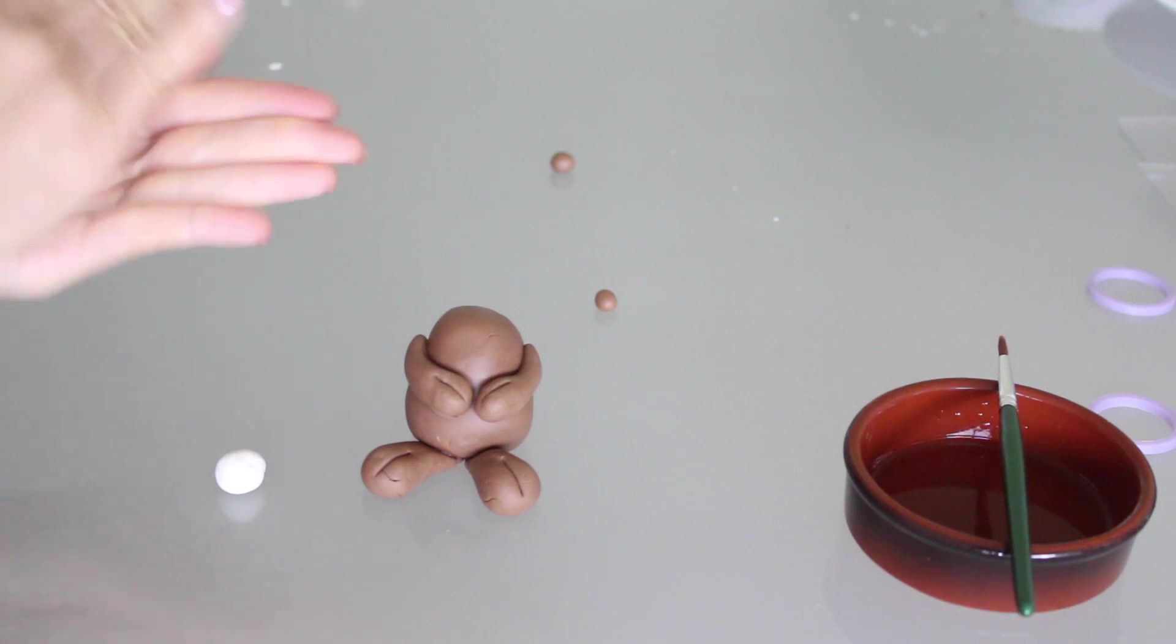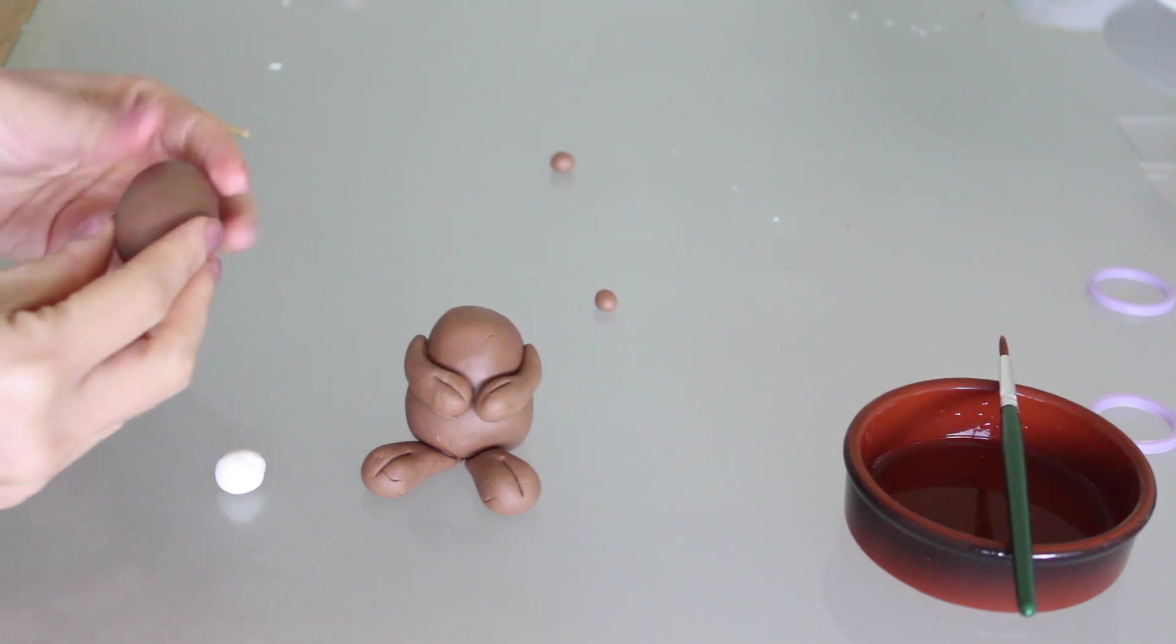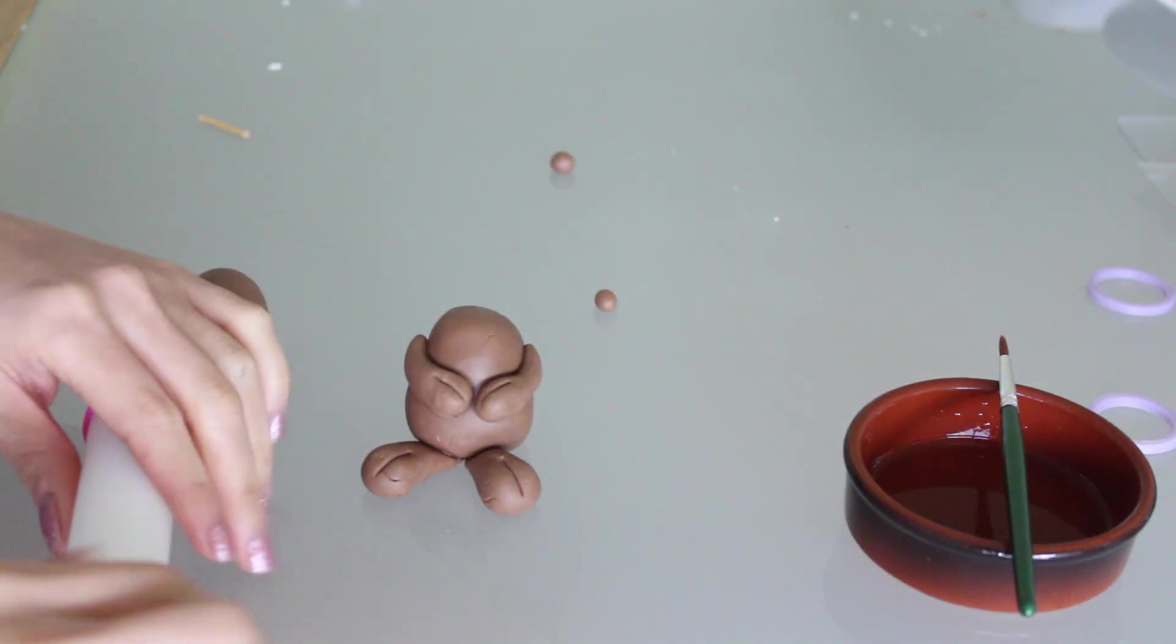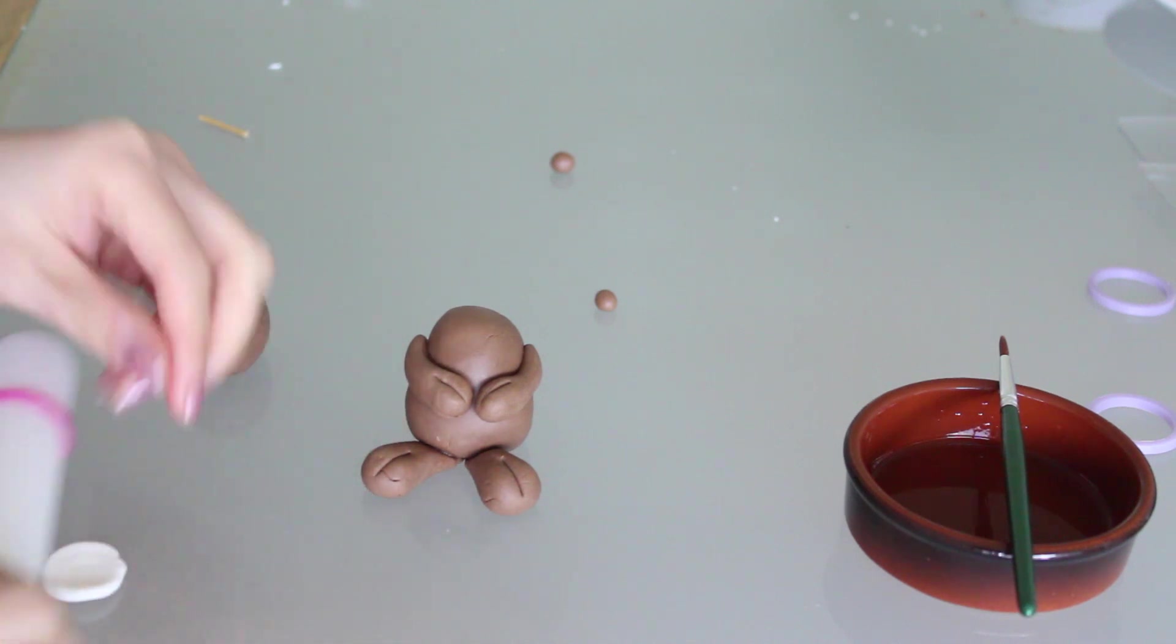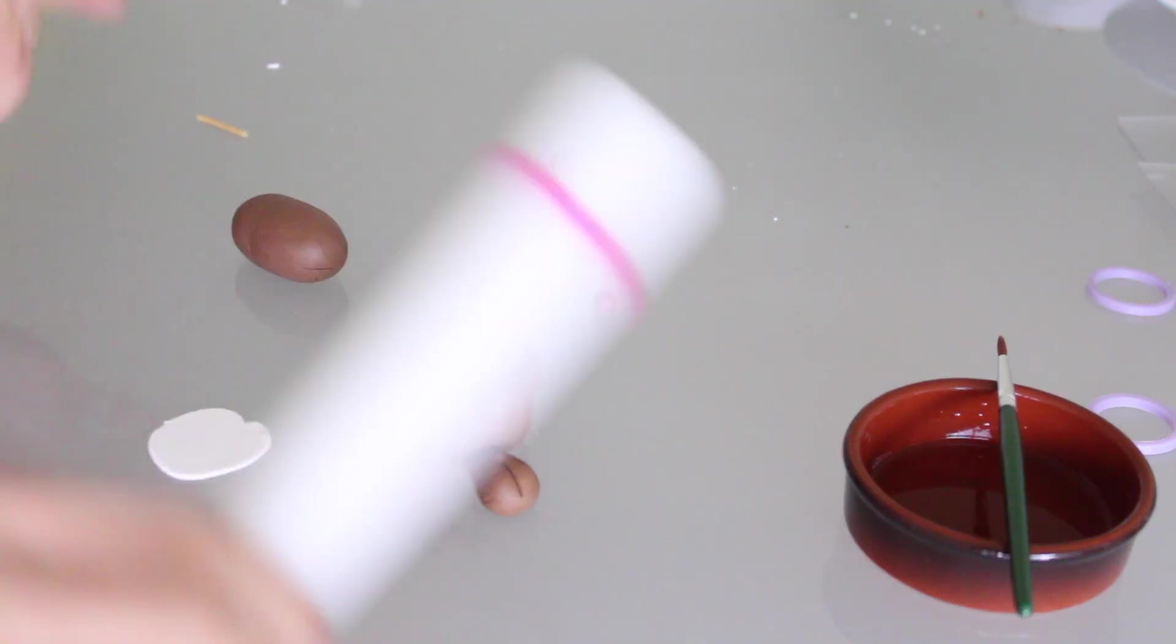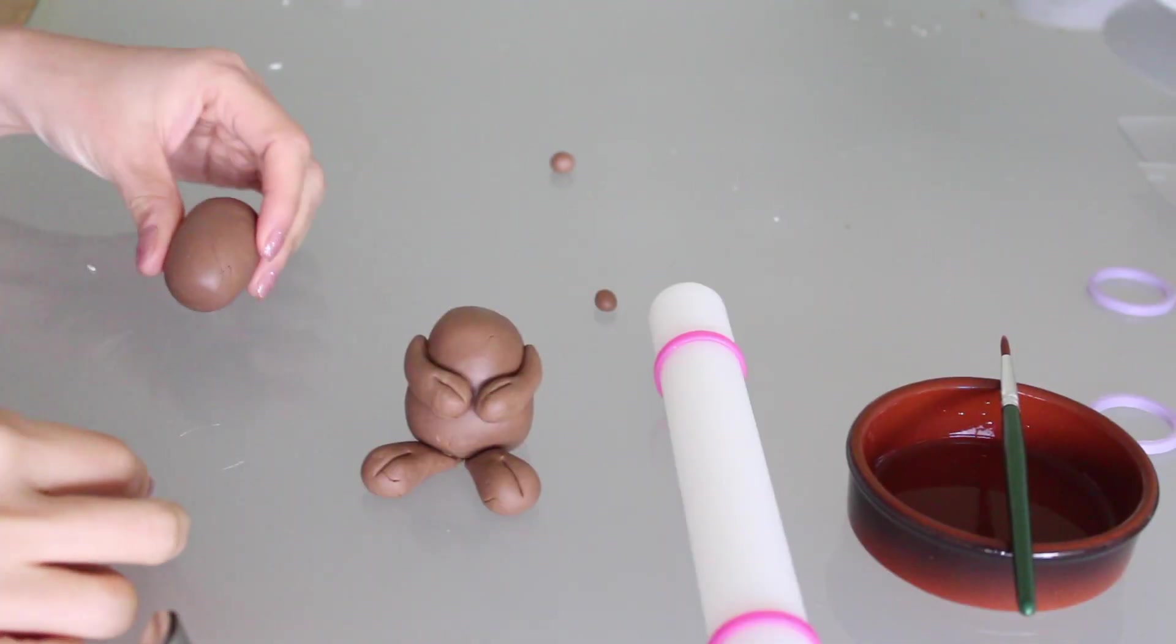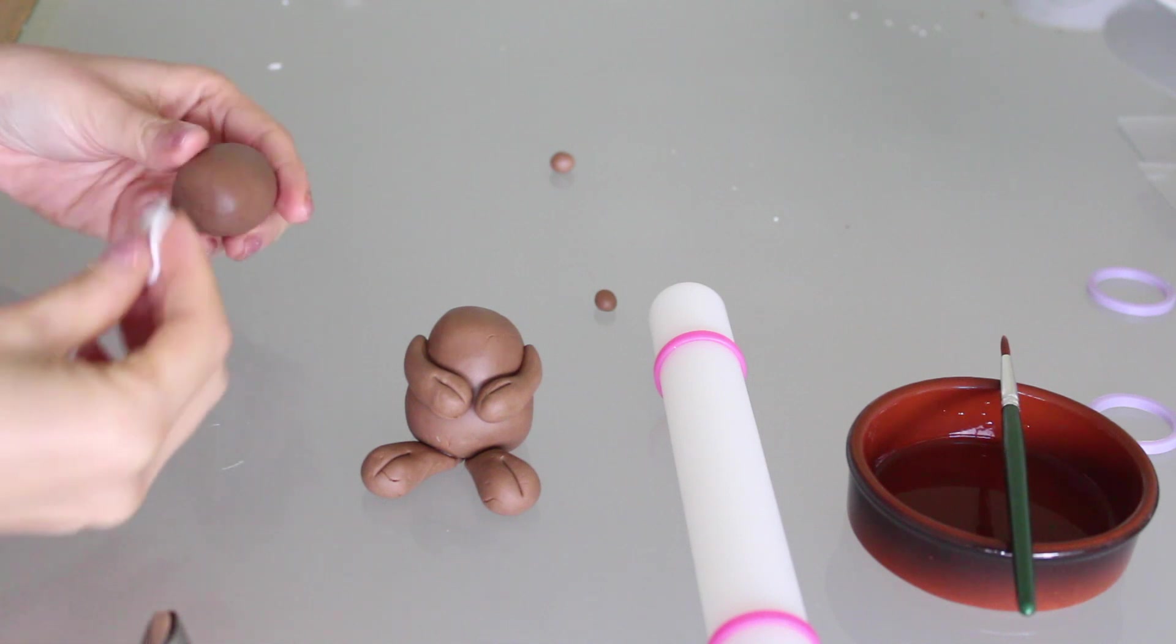And now it's time to give the horse a head. Roll the ball of fondant, meant for the head, into an oval. Using a rolling pin, roll the white fondant out flat, and then use the end of a piping tip and cut out a circle. Place the circle of white fondant on one end of the head.